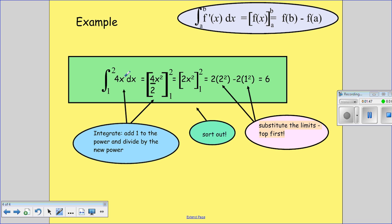So when we integrate this, we add 1 to the power divided by the adjusted power, so this is 4 over 2 x squared. And then we're going to do this between 2 and 1.